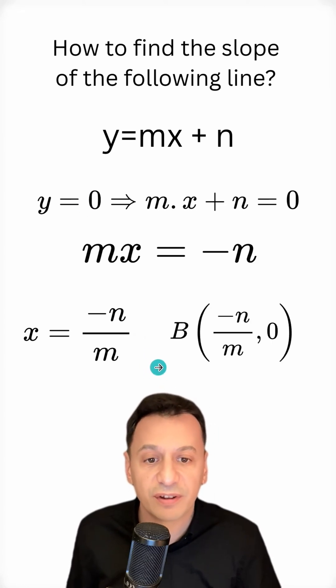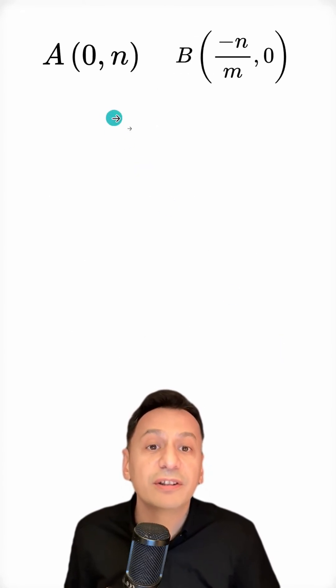So let me write my second point as well. My abscissa is minus n divided by m, and my ordinate is 0.